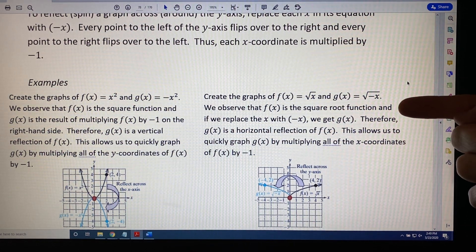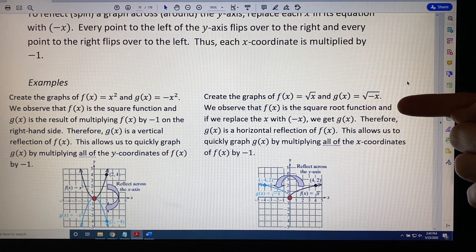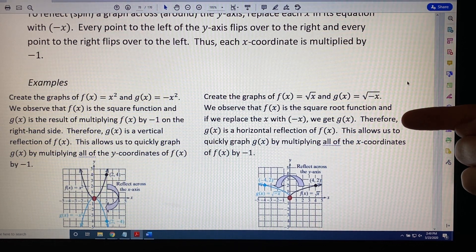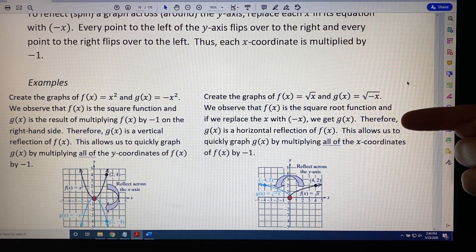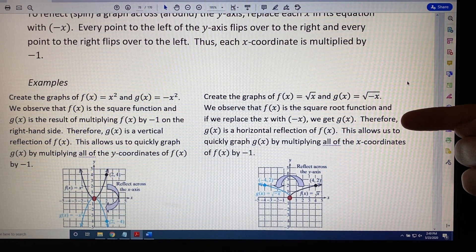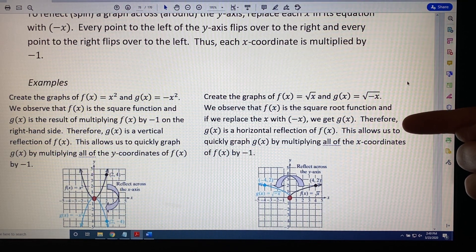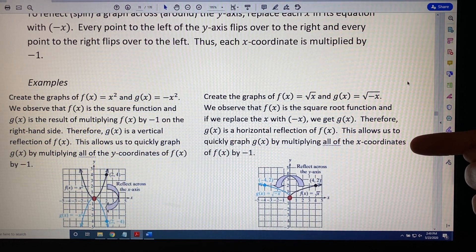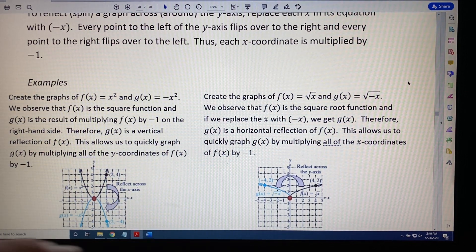We observe that f(x) is the square root function, and if we replace the x with negative x, we get g(x). Therefore, g(x) is a horizontal reflection of f(x). This allows us to quickly graph g(x) by multiplying all of the x-coordinates of f(x) by negative 1. Okay, let's look at the picture.